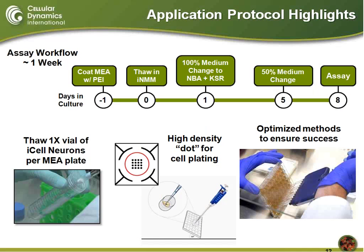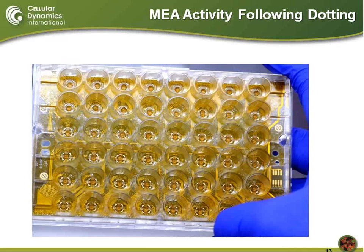I wanted to take another slide or two to showcase some of the highlights of this method. The assay workflow is just about one week long — after the iCell neurons are thawed and plated, you really only need to perform two media changes and you're good to go on day eight post-thaw. We've formatted this so that one vial of cryopreserved cells is used per one 48-well MEA plate, and we put down a high-density dot of neurons in the middle of each well, optimizing really each step of the assay to ensure success.